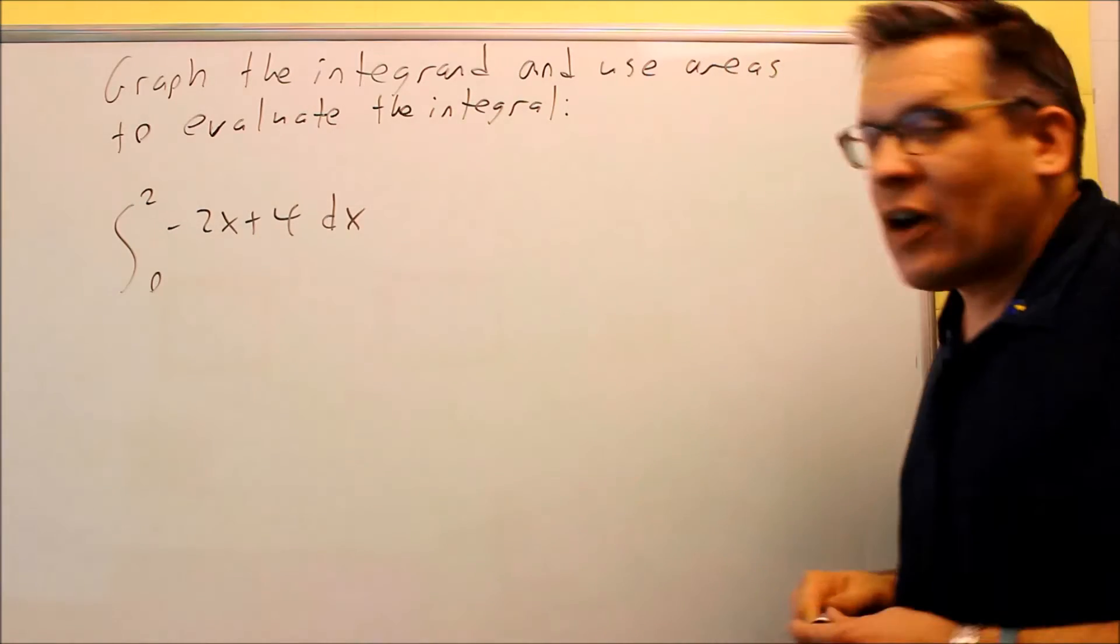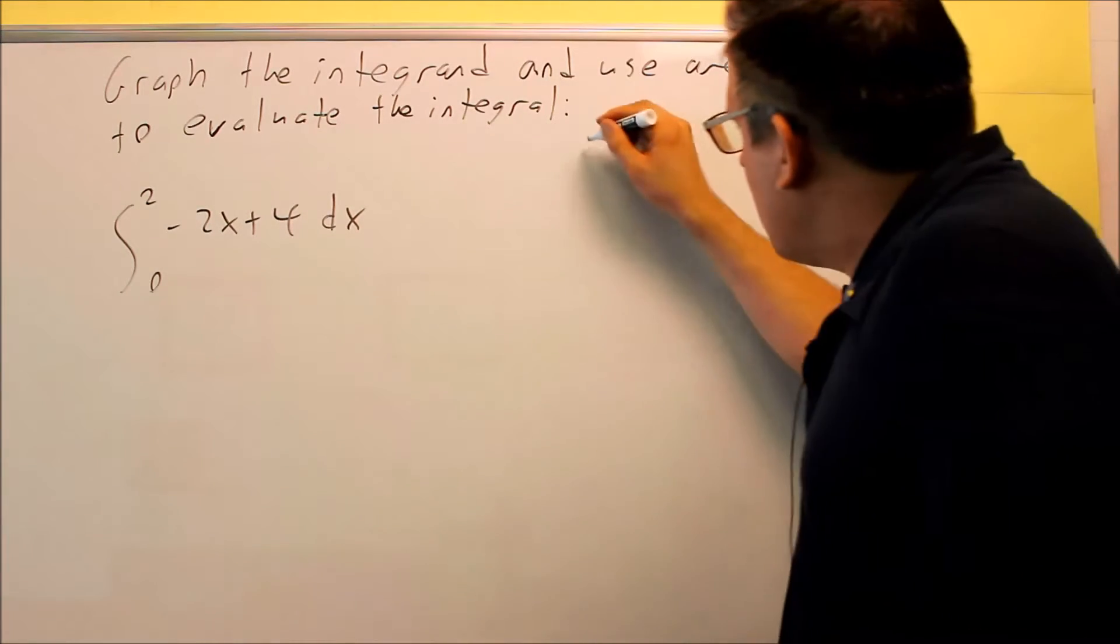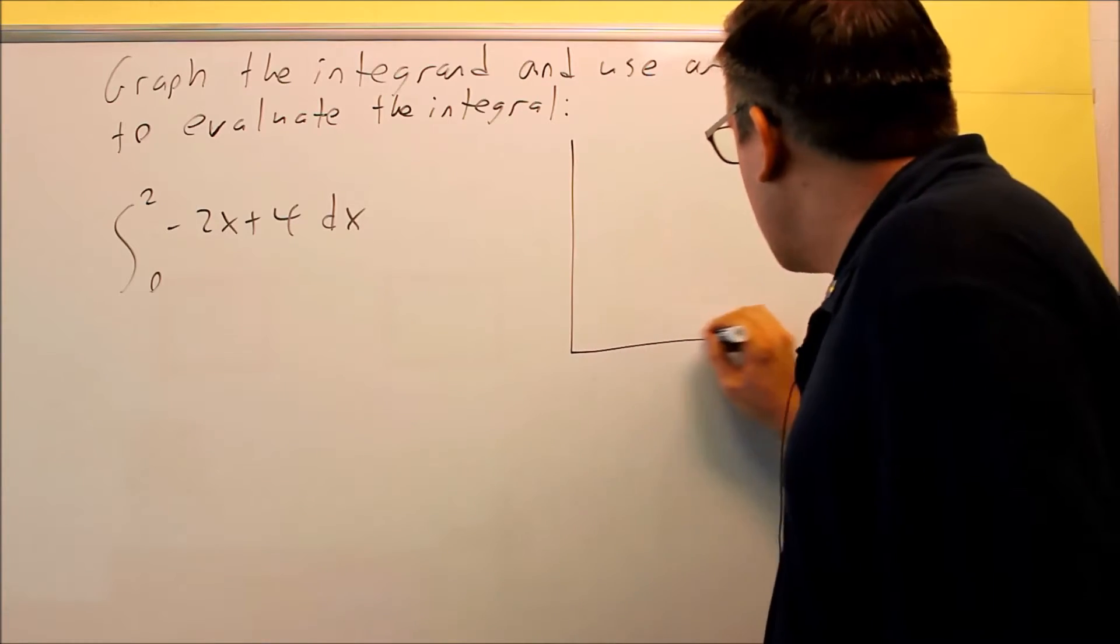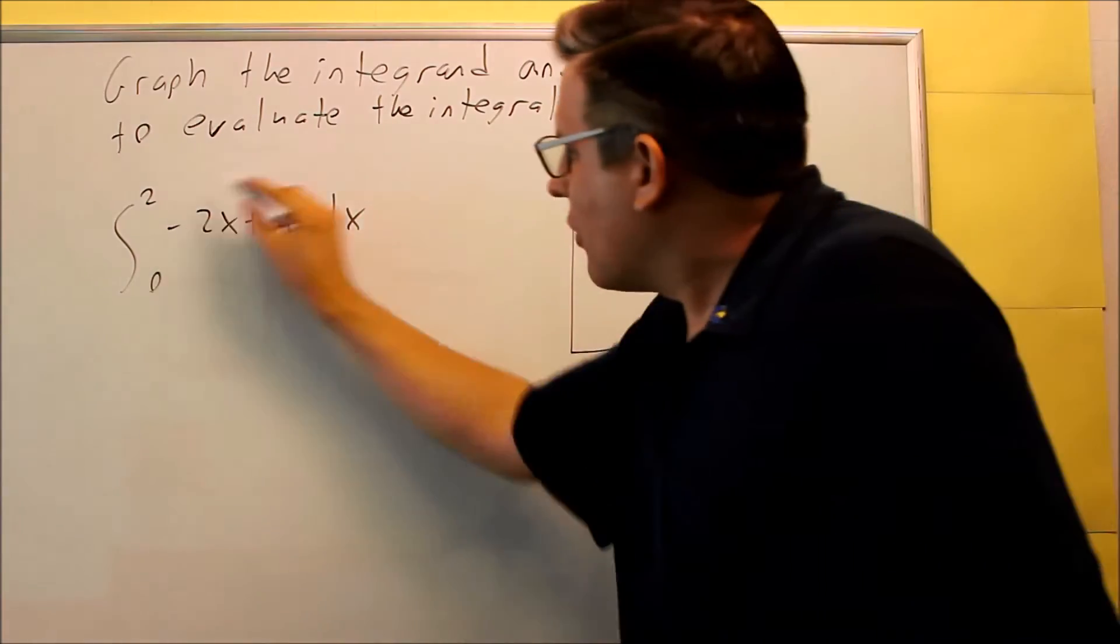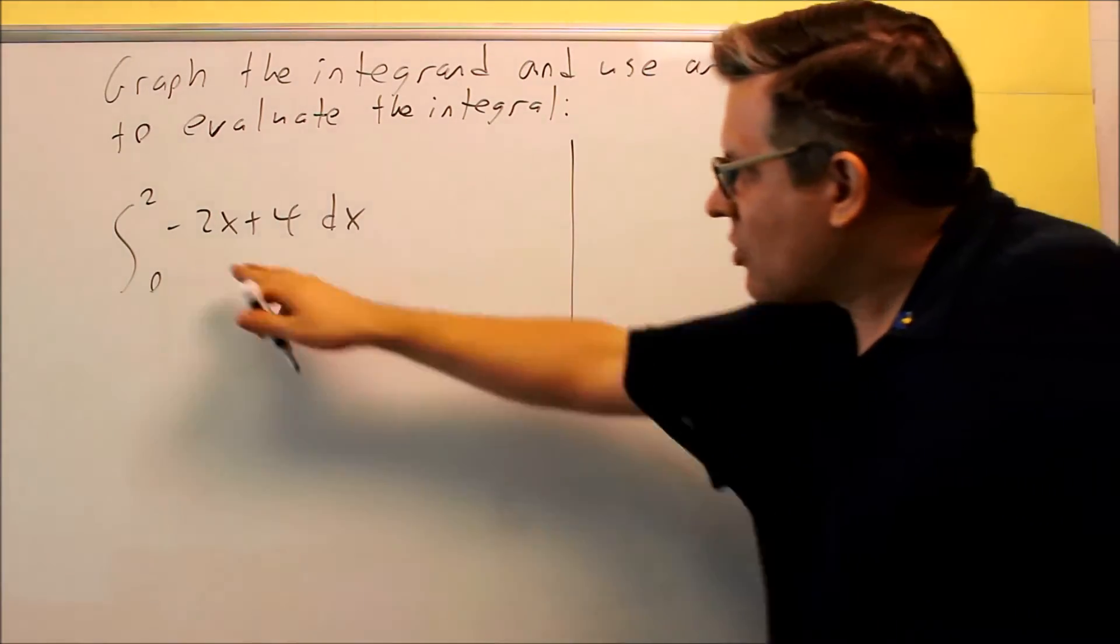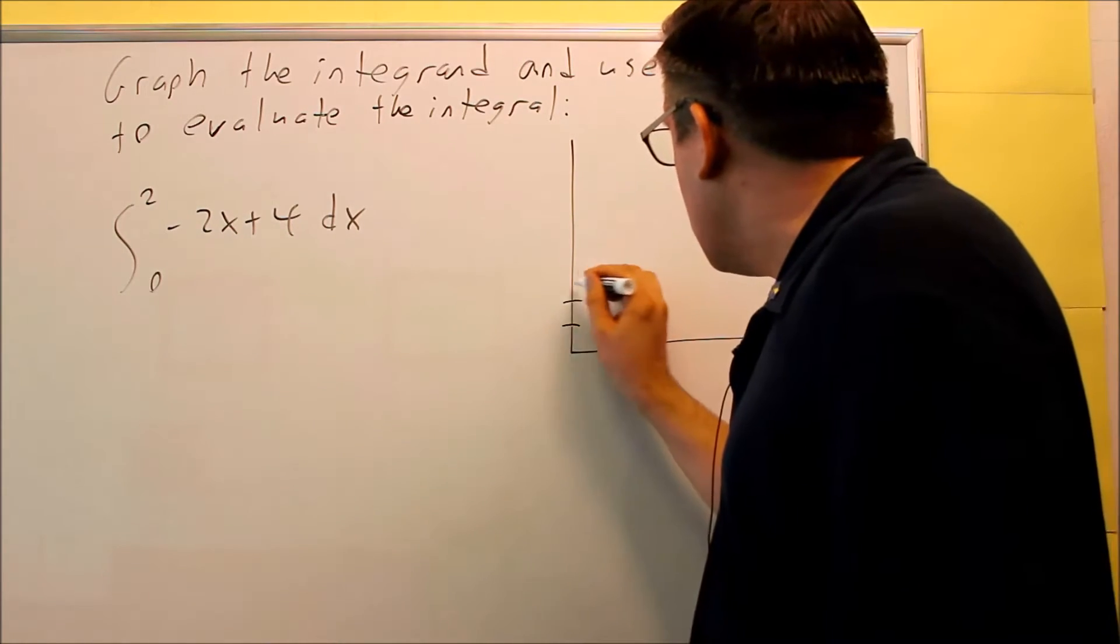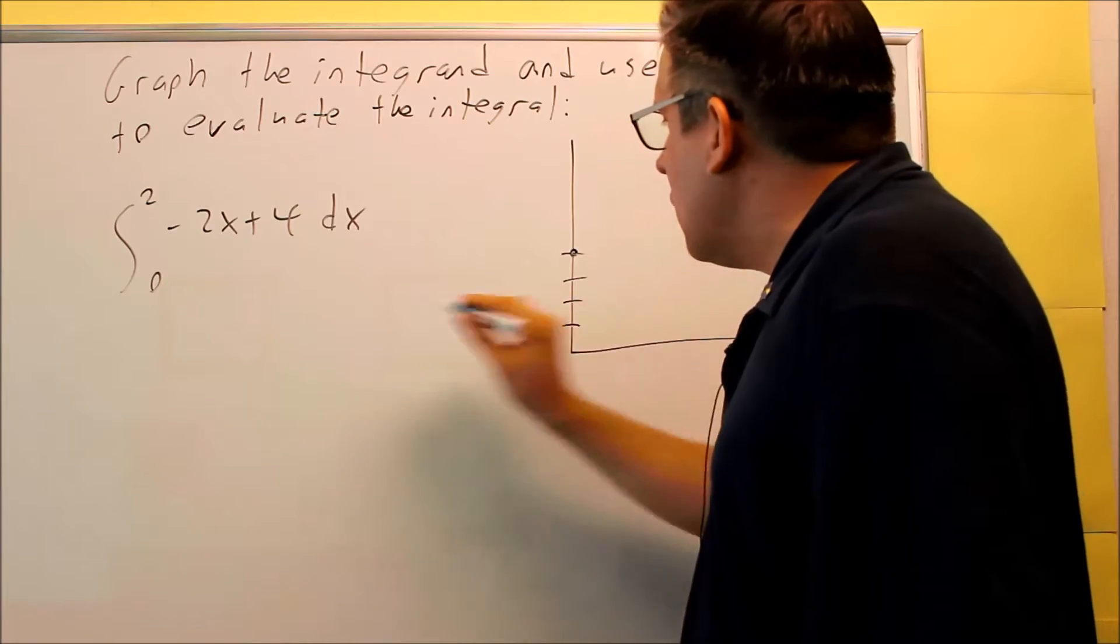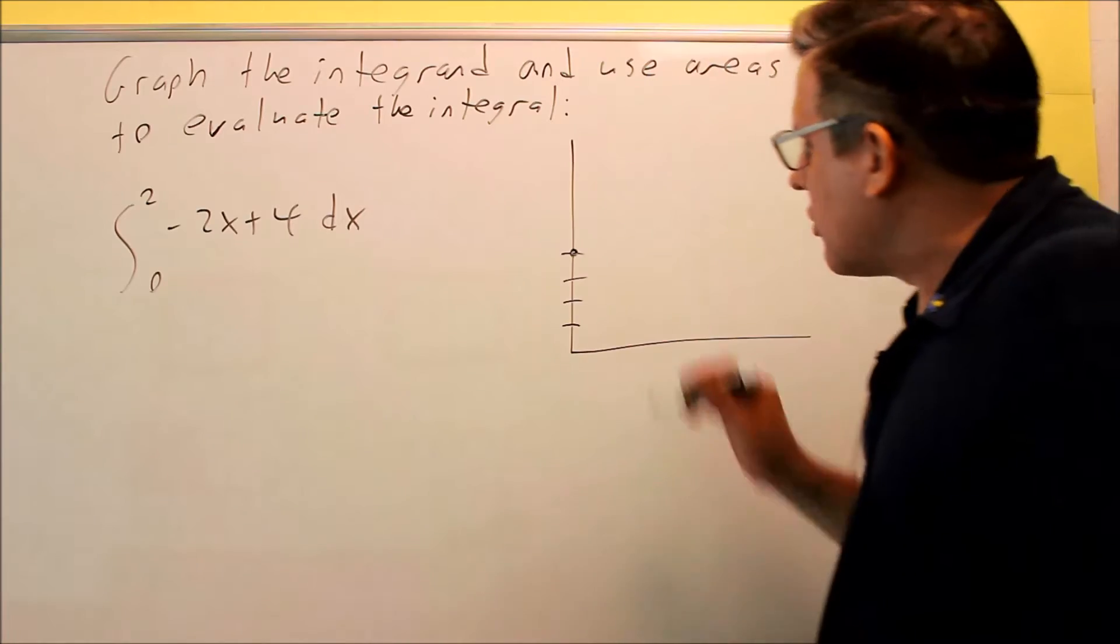The first thing we have to do is graph this because we don't know what kind of formula to apply. So notice that we're working only between the x values of 0 and 2, and this is the function that we want to graph. Now remember this from algebra. This is y equals mx plus b form, which means that the first thing I want to do is plot the 4 because the 4 is your y-intercept. Negative 2 is going to be your slope.